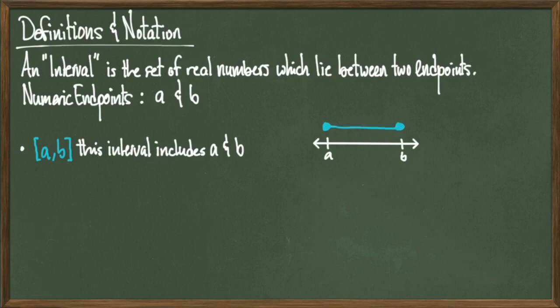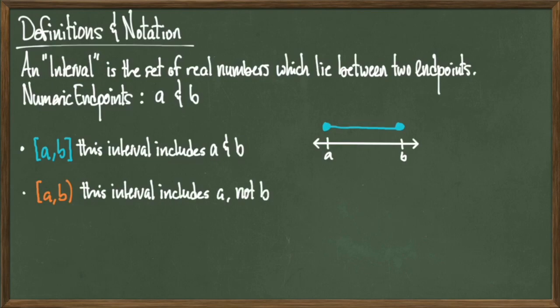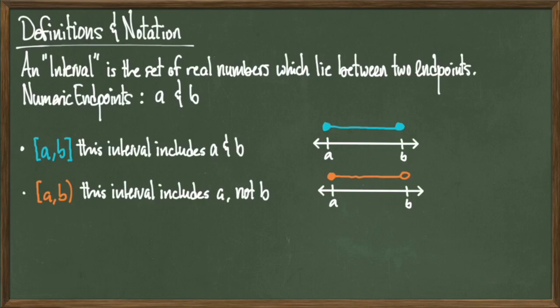The way to draw the set [a, b] on a number line is to draw the line segment from a to b and color the ends with filled-in circles. The next notation [a, b) denotes the set of all numbers from a to b that includes a but not b. I'm including a because there's a square bracket next to it, but not including b because of the parenthesis. On the number line, it looks the same except b has an open circle instead of a filled-in one.